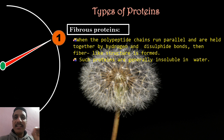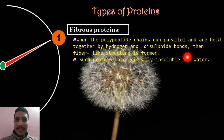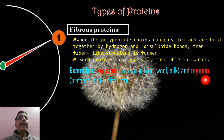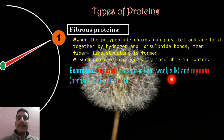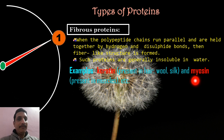Fibrous proteins form when polypeptide chains run parallel to one another. Remember the examples for examination purposes. Examples are keratin protein, present in hair, wool, and silk. Also, muscles contain a protein called myosin. Keratin and myosin are examples of fibrous protein.